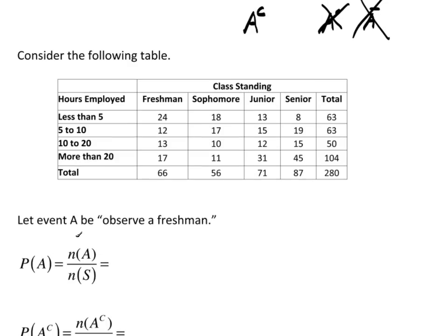Let event A be observe a freshman. Now, the probability of A is the number of ways A can happen divided by the number in the sample space. Well, here's my freshman. And what this represents is some survey that was done, and we ended up with this table based on a total of 280 students. And they asked simply the hours of work: less than 5, 5 to 10, 10 to 20, more than 20.